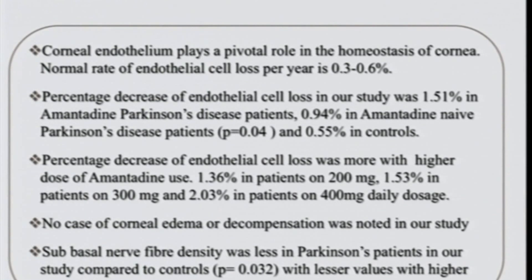Corneal endothelium plays a pivotal role in the homeostasis of the cornea. The normal rate of endothelial cell loss per year is 0.3 to 0.6%. The decrease in our study was 1.51% in Parkinson's patients on amantadine, 0.94% in amantadine patients, and 0.55% in controls. The decrease was higher with greater dosage: 1.36% in patients on 200 mg, 1.53% on 300 mg, and 2.03% on 400 mg.